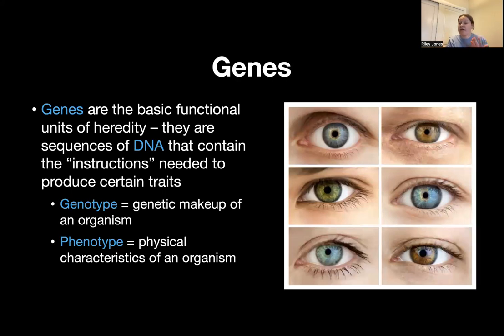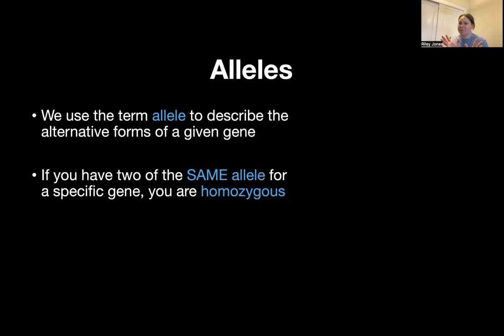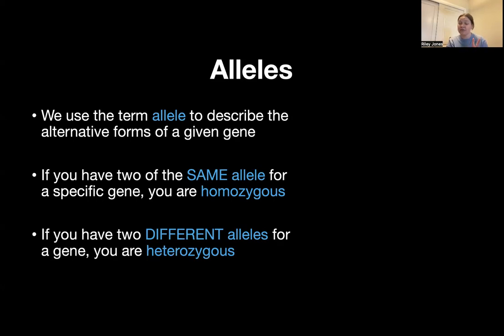So a phenotype would be the green eyes, and the genotype would be the code which produces those green eyes — and that'll make a little bit more sense in just a minute. We also have what are called alleles. An allele is basically a term that describes the alternate form of a given gene. It might sound confusing, but I promise it'll make sense. They're typically expressed in letters. So let's say we're using the letter B. If you have two lowercase b's, which code for a specific gene or specific trait, that's what we call a homozygous allele. If you have different alleles — so let's say an uppercase B and a lowercase b — that would be called heterozygous.